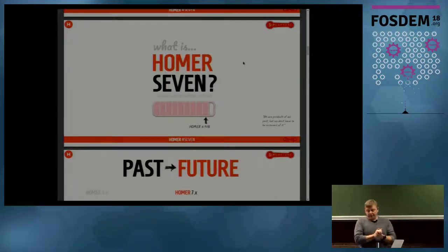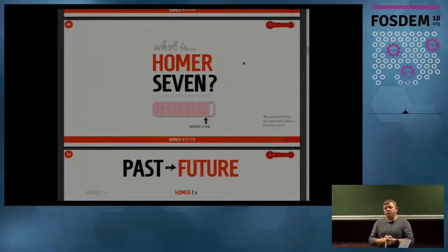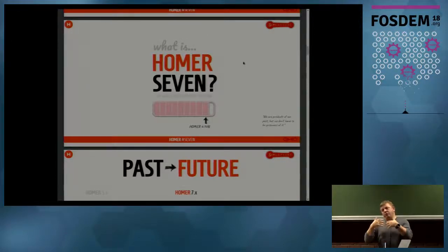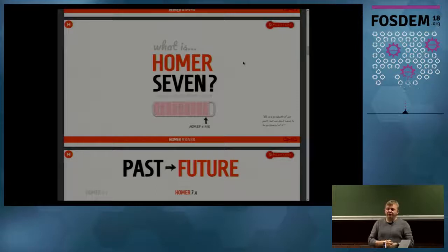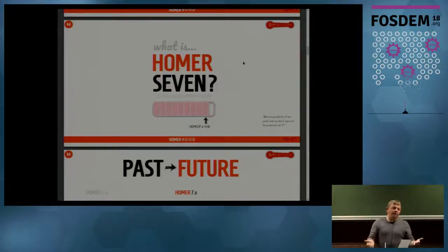So why HOMER 7? Because the last version was HOMER 5. It's a long story, but in short, HOMER 6 did exist, and we were almost ready to release it for better testing. But new ideas kept coming — let's implement this feature, let's implement that feature. MySQL 5.7 JSON protocol was released, and so on. So many features we implemented always delayed a new release. Therefore, we checked and saw we had already jumped past version 6, and we are ready to release HOMER 7.